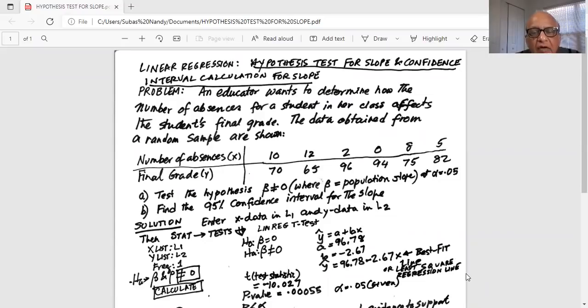Test the hypothesis beta. Beta is the population slope of the least square regression line. Beta is not equal to zero at alpha equal to 0.05. Find the 95% confidence interval for the slope. That's part B.